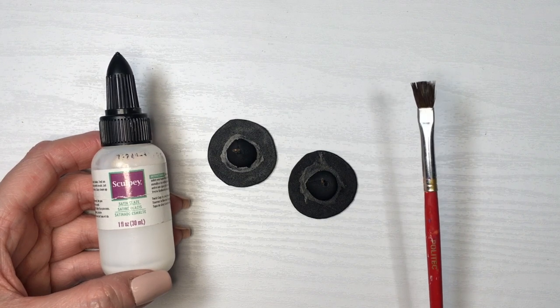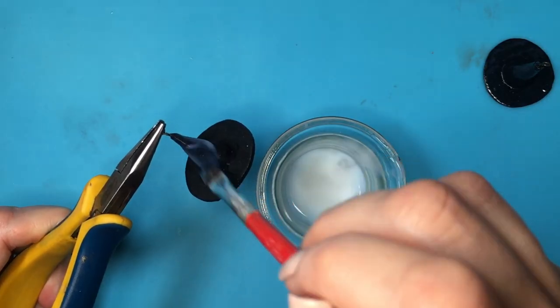I'm adding some gloss—the one I'm using is Sculpey gloss, adding two to three coats. I made three of these; two of them are going to be earrings.